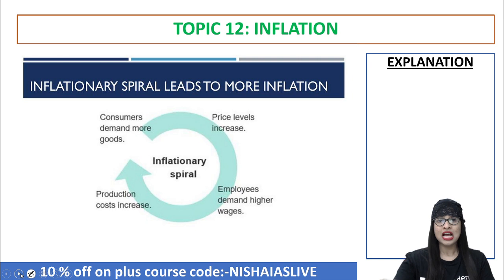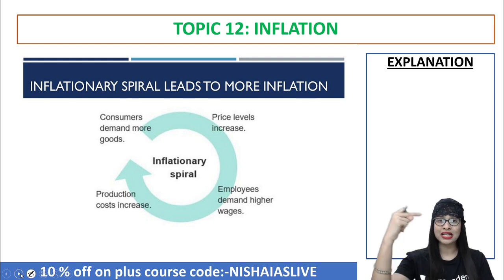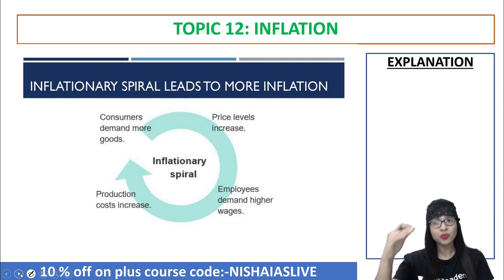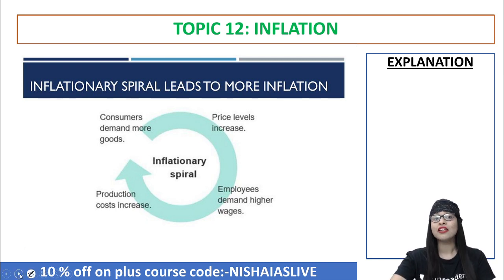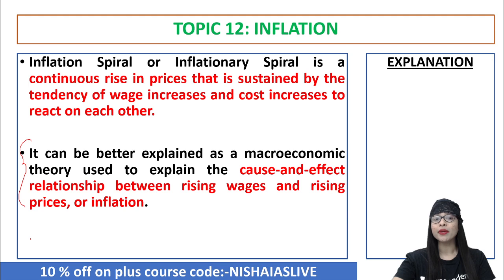Inflationary spiral also leads to more inflation because consumers start demanding more goods, prices increase due to higher demand, and laborers who need to meet higher prices start demanding more wages. The production cost increases because only then can the producer pay higher wages to laborers, with which laborers can buy commodities from the market at a higher price. It's a cycle of continuation. It can be better explained as a macroeconomic theory explaining the cause-and-effect relationship between rising wages and rising prices or inflation.